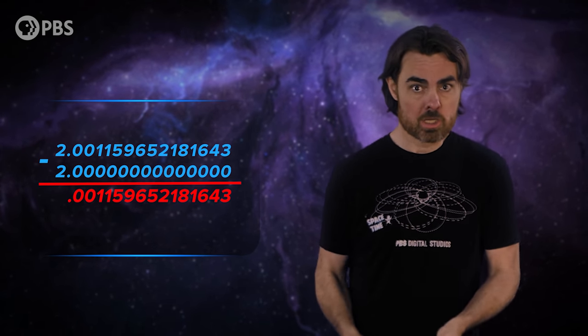By the way, the anomalous in the anomalous magnetic dipole moment refers to that little bit extra after the two. So the g-2 in Fermilab's experiment name refers to that leftover bit.